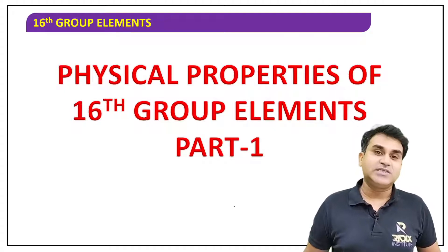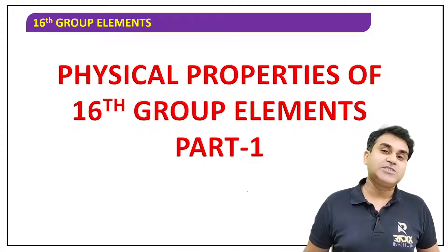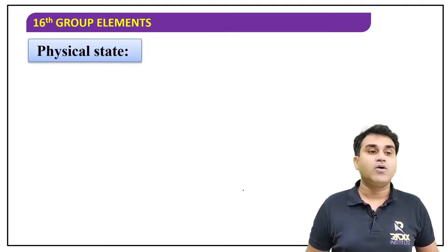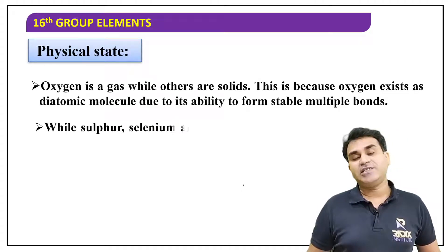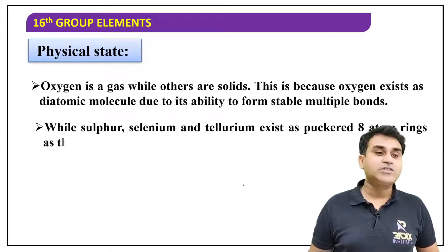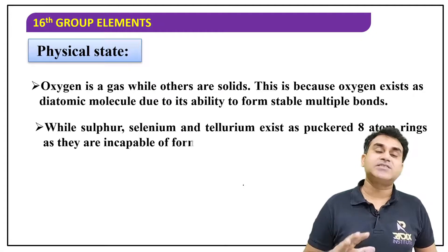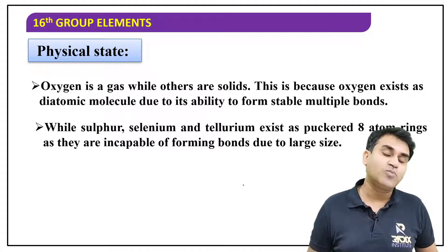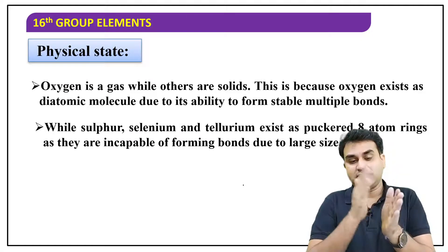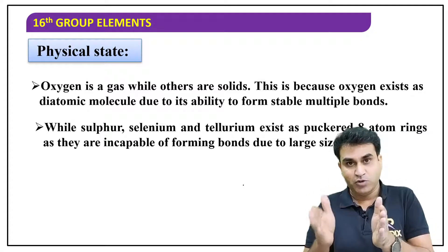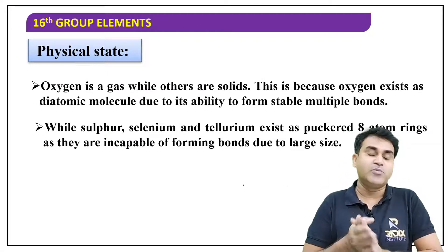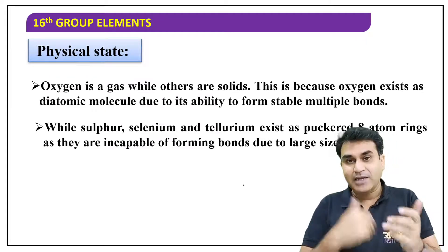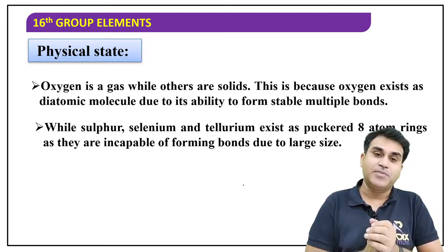Physical properties of the 16th group elements, part 1 — here we will mainly discuss periodic properties. Physical state: oxygen is a gas, while the other elements are solid. In the 16th group we have oxygen, sulfur, selenium, tellurium, polonium, and livermorium. The first element is a gas; the remaining elements are in the solid state.